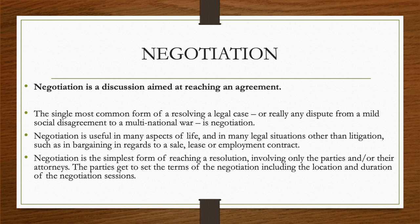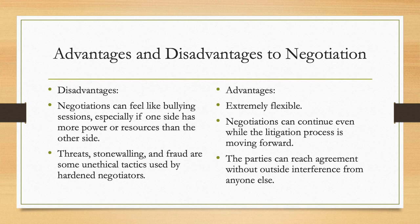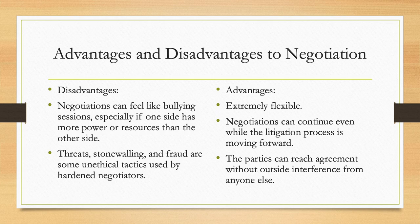Negotiation is the simplest form of reaching resolution, involving only the parties or their attorneys. Disadvantages include that it can feel like bullying, especially if one side has more power or resources than the other, so the threat of litigation may be very difficult for one side that doesn't have the same amount of money or access to expert witnesses. Threats, stonewalling, and fraud are all unethical tactics used by hardened negotiators. Some advantages are that it's extremely flexible — negotiation can continue even while the litigation process moves forward, and the parties are able to fashion an agreement without outside interference or influence.